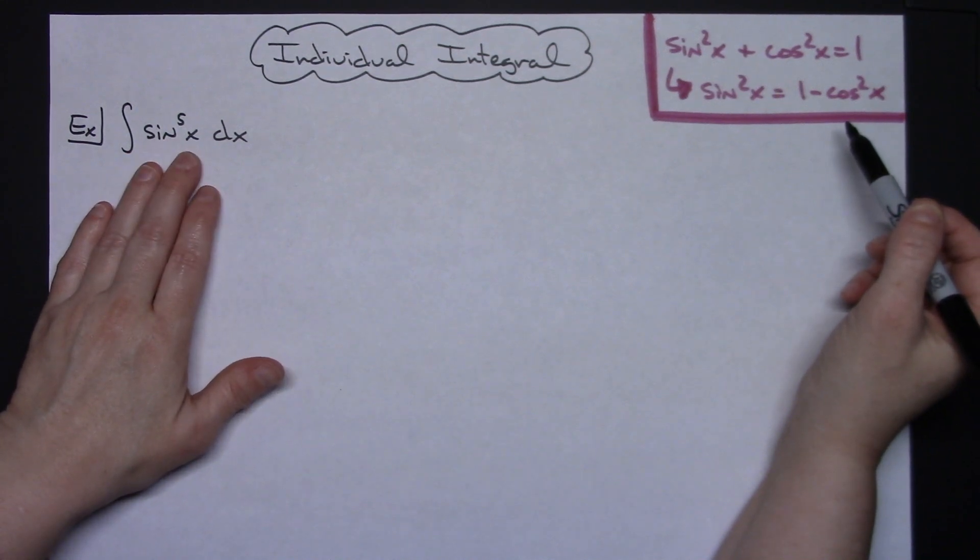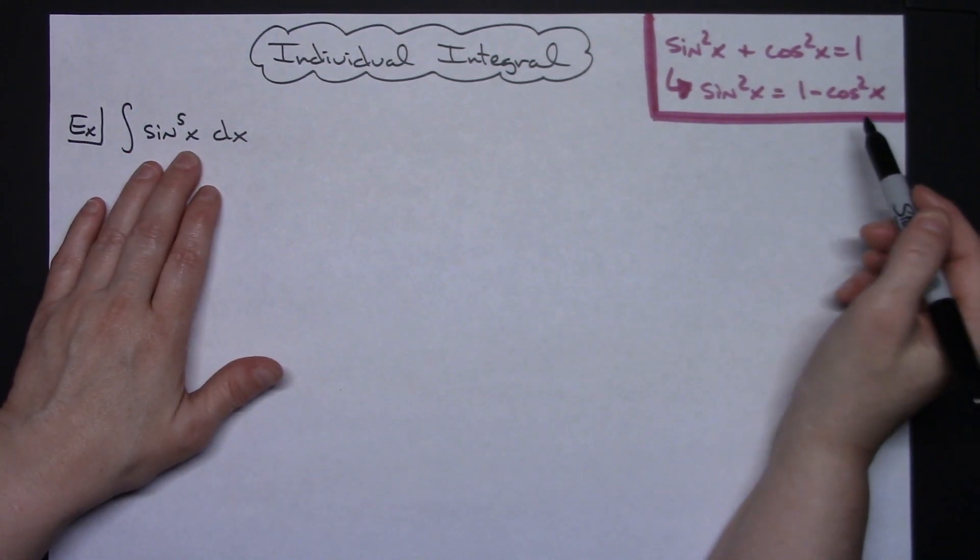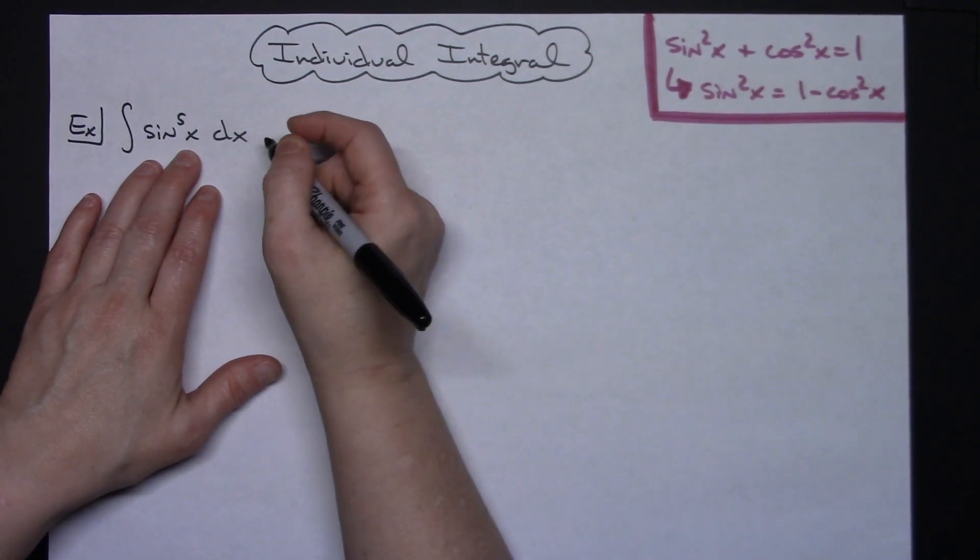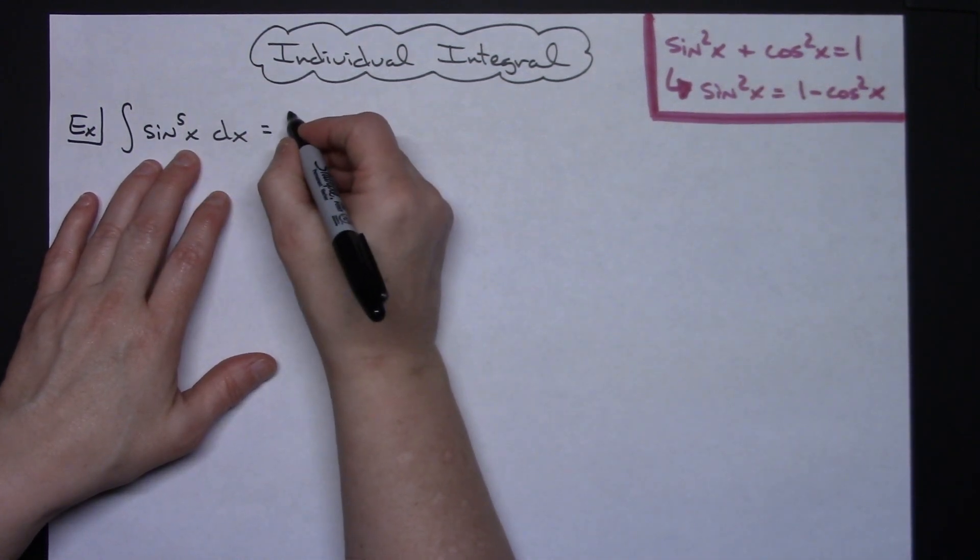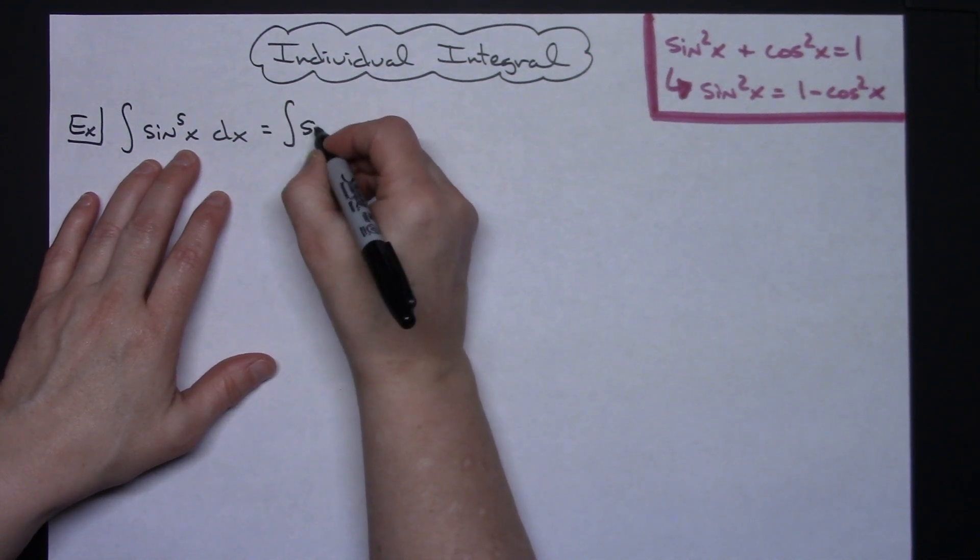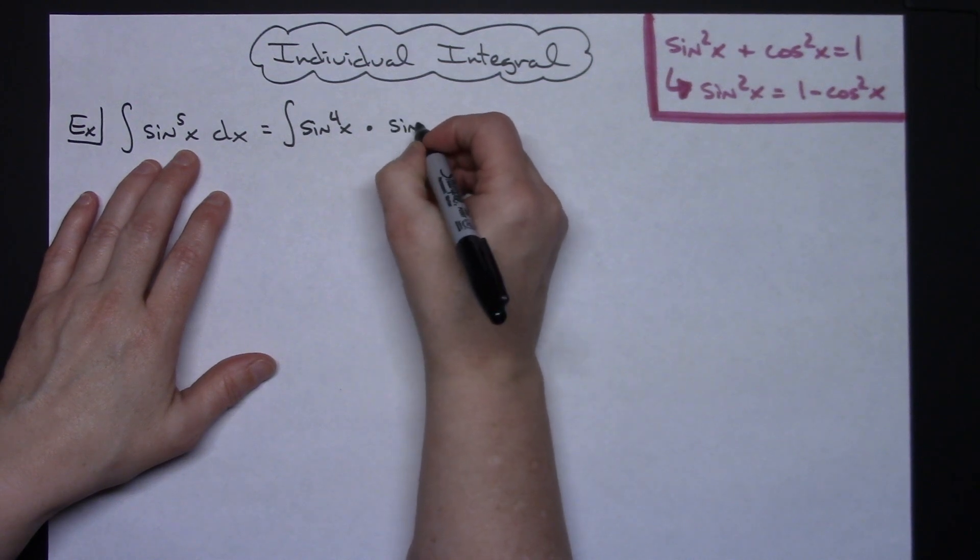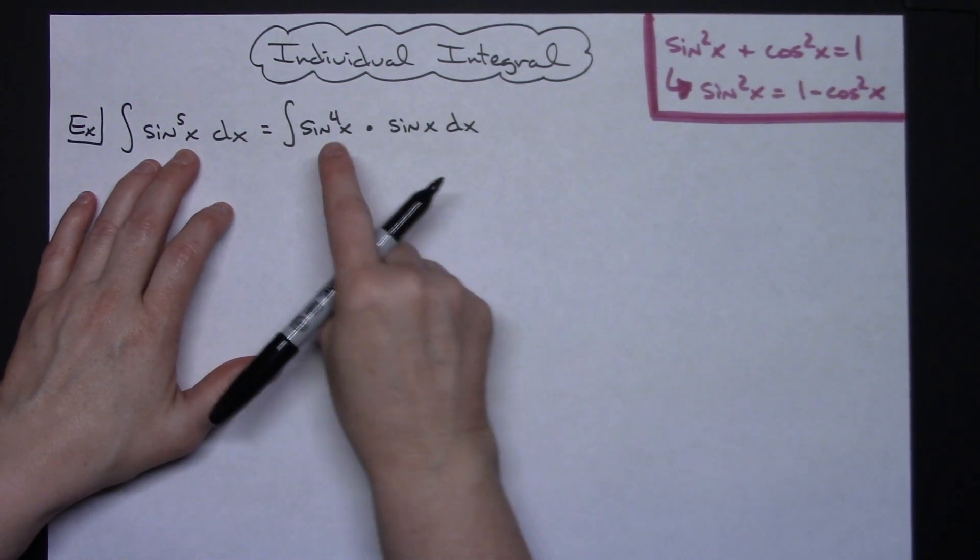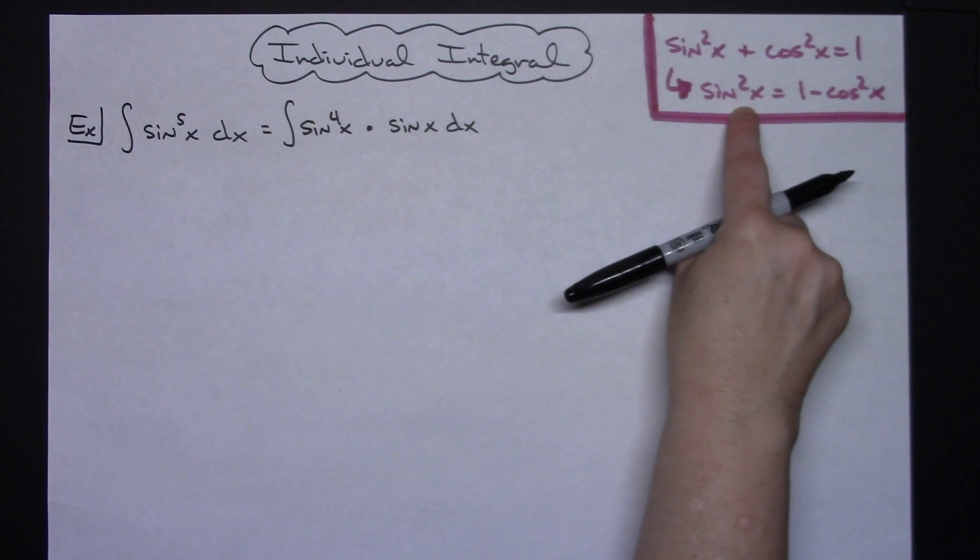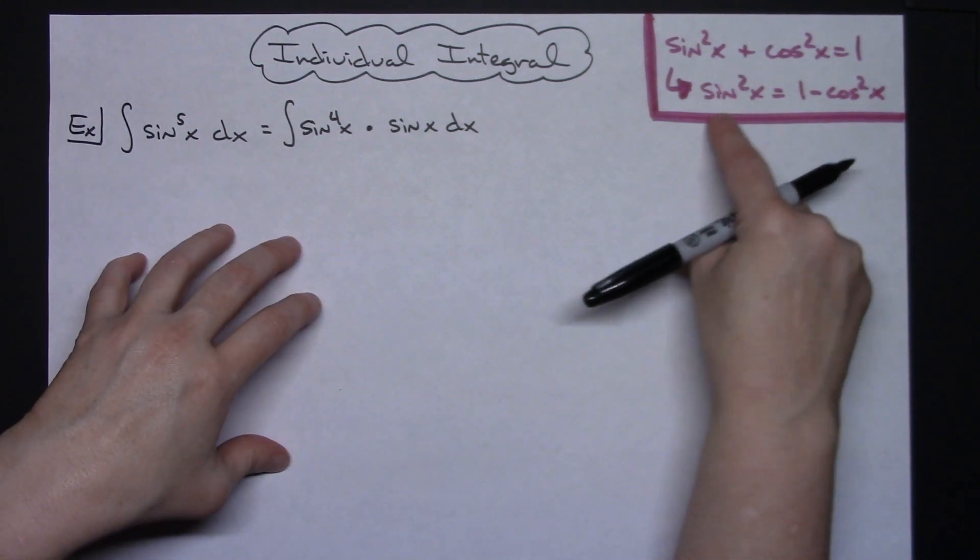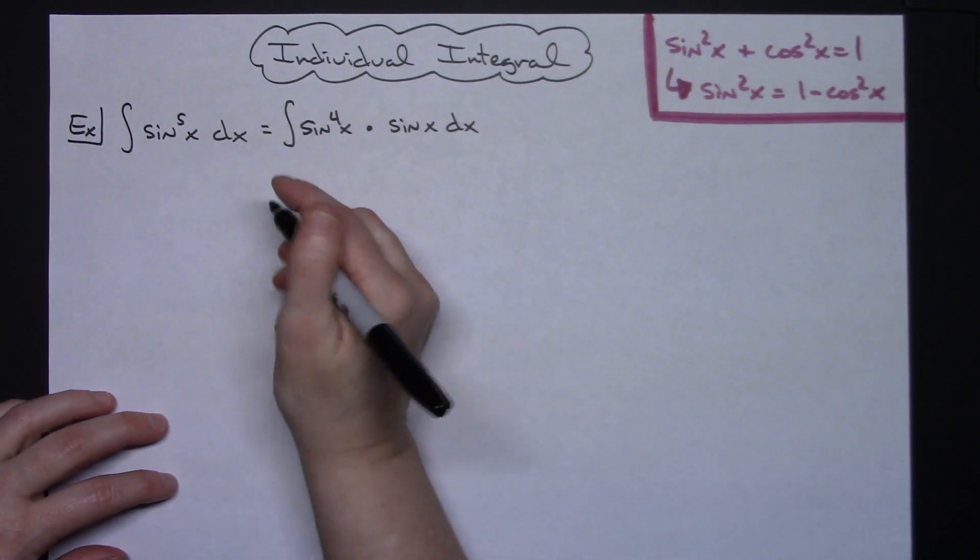So what I'm going to do is break this up into a multiple of sine squared x times sine x. I'm going to split this into sine to the fourth x times sine x dx. Now since this is a multiple of that I can use my laws of exponents and I can say sine squared x squared is going to give me this sine to the fourth power.